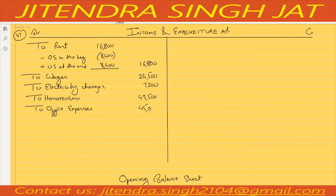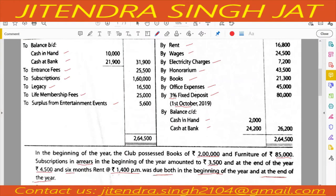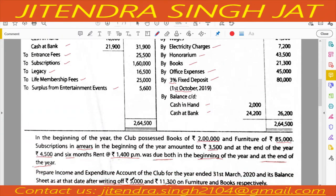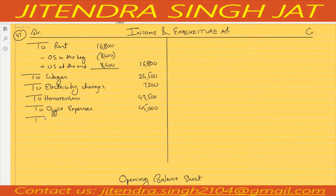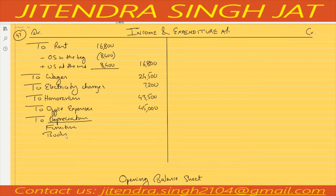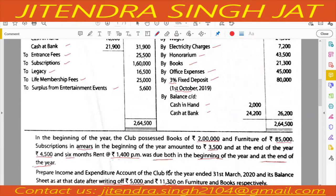Three percent fixed deposit income will be calculated separately on the income side. Closing cash and bank balances are given. Depreciation on furniture is 5,000 and on books is 11,300, totalling 16,300 depreciation recorded on the debit side. All expenditure points are now covered.